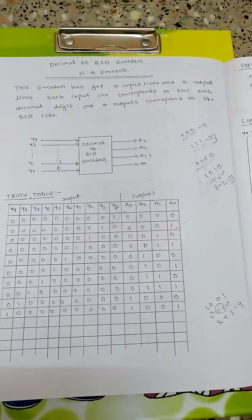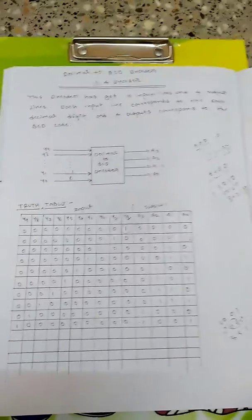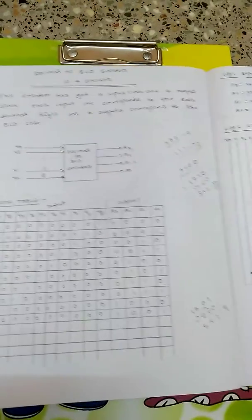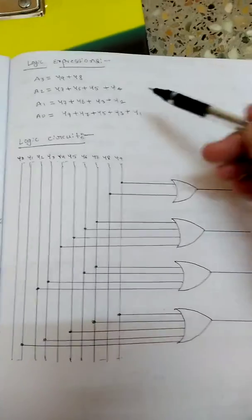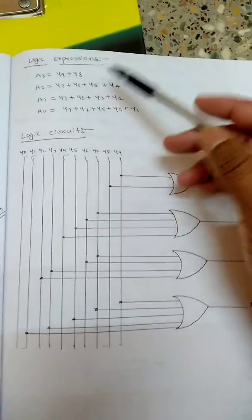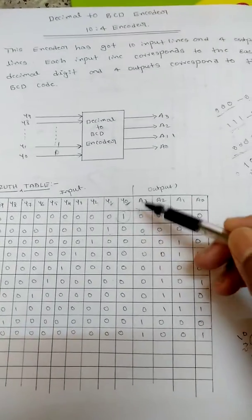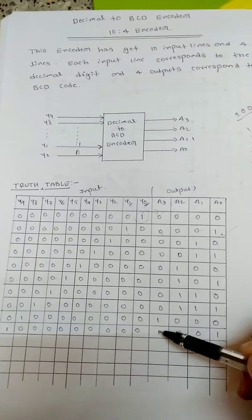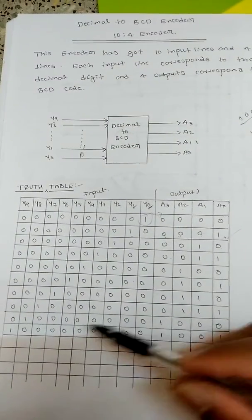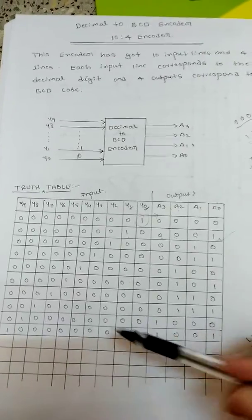I hope you understood the truth table. Now let's move on to logical expressions. The logical expressions are a3, a2, a1, a0. So y9 and y8, why am I writing y9 and y8 for a3? For a3 only two values are high, so these are the two values corresponding to y9 and y8.